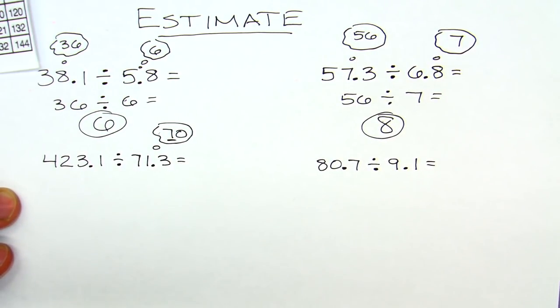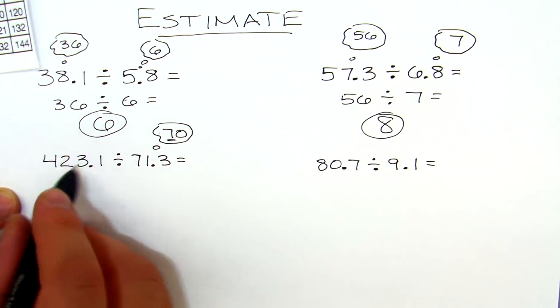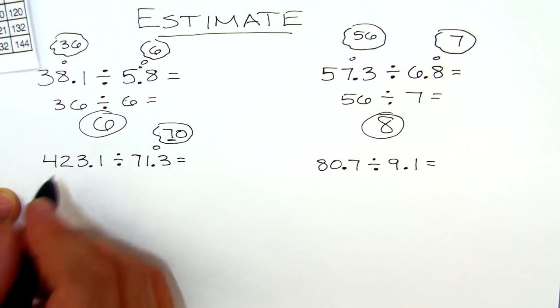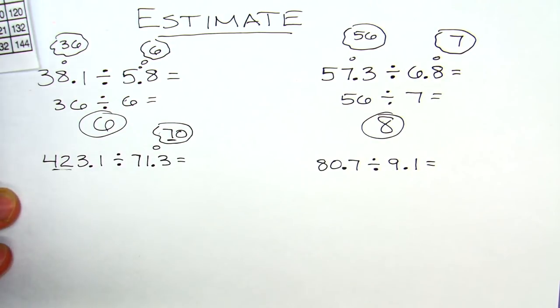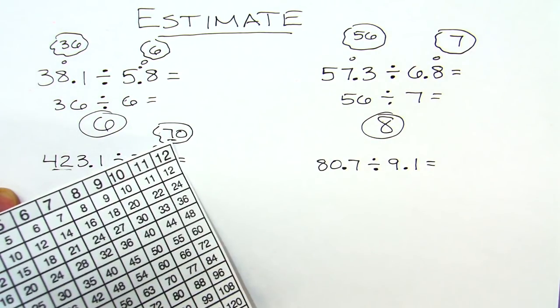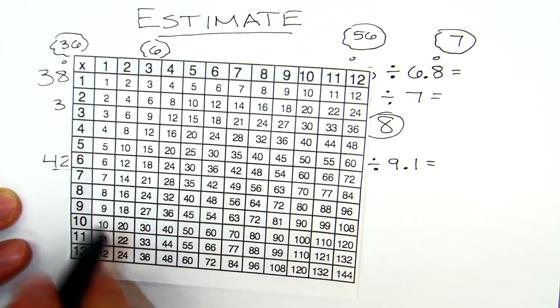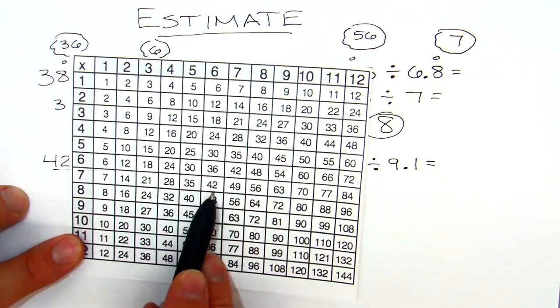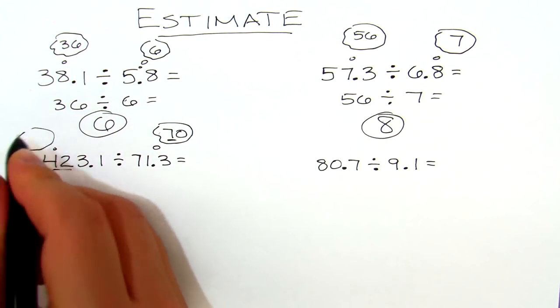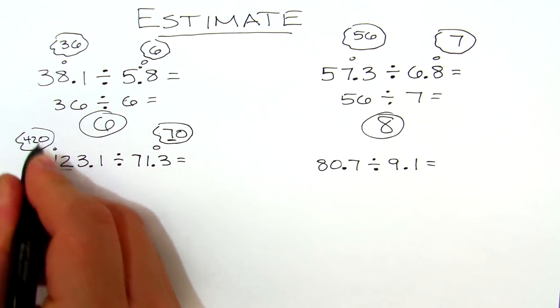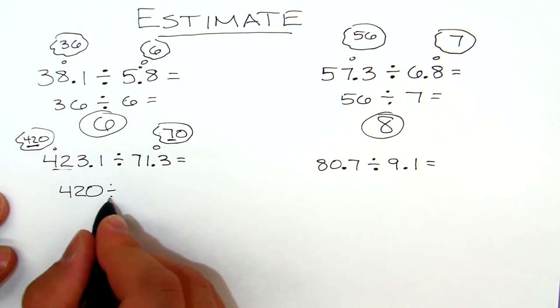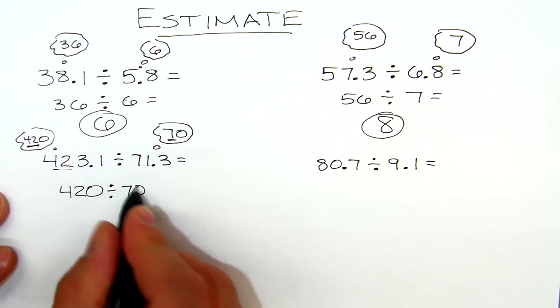If I look at 423, what multiple of 7 is close to 42? Since I'm only using the first digit here, I'm gonna use the first digit over here. Well if I look at 7, it hits 42 exactly. So I'm gonna pretend that this is 420, and I'm gonna focus on the 42. In my head it's gonna be 420 divided by 70, and that's gonna give me 6.